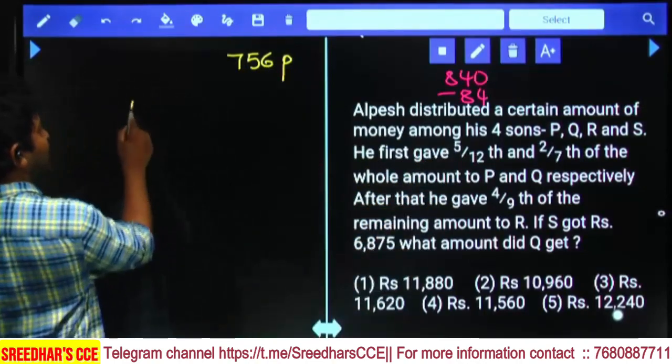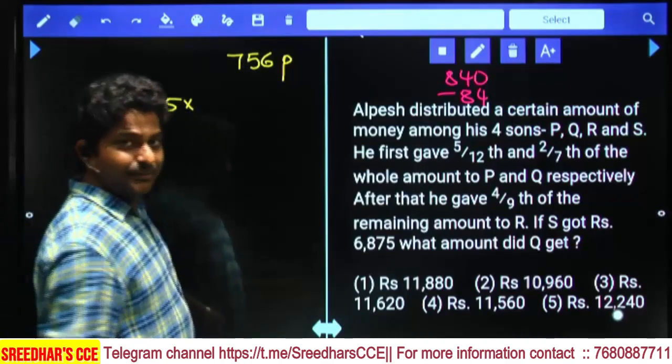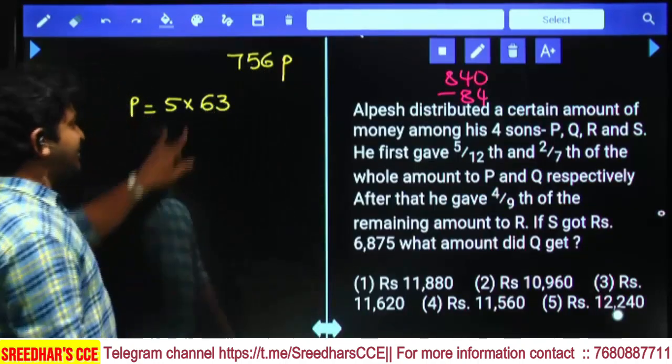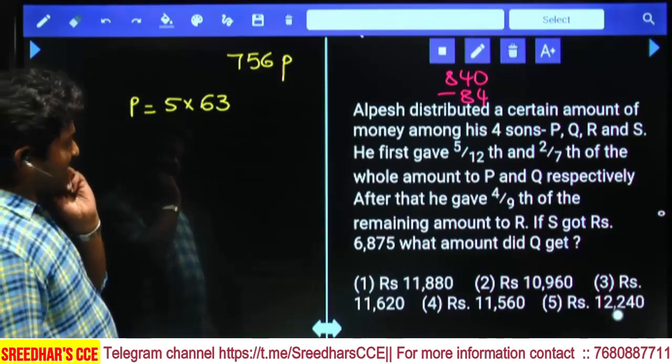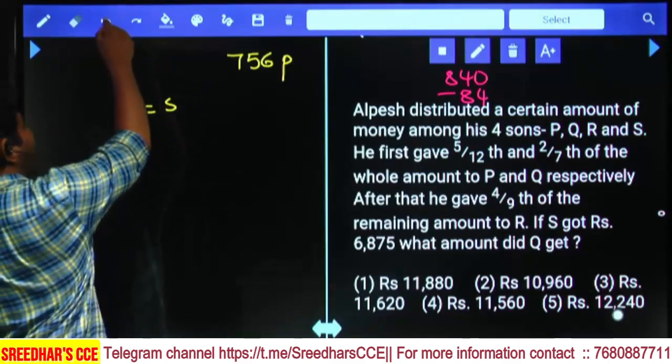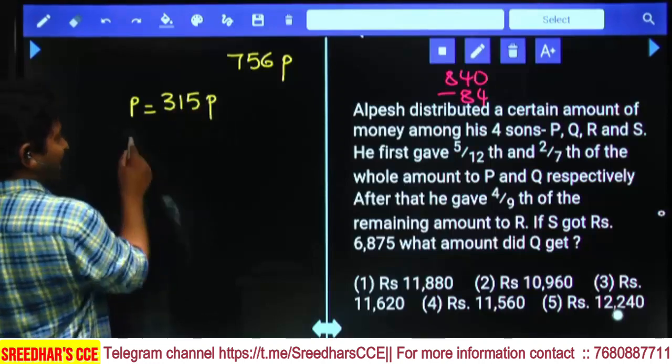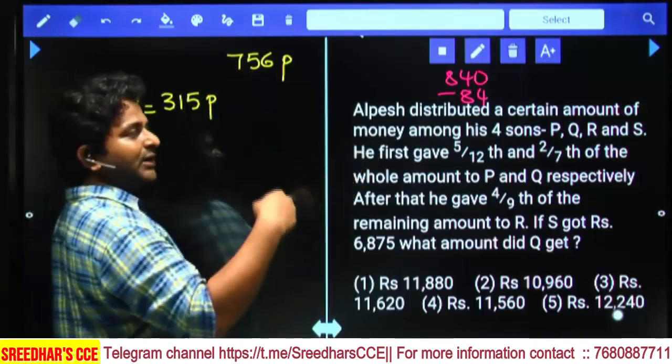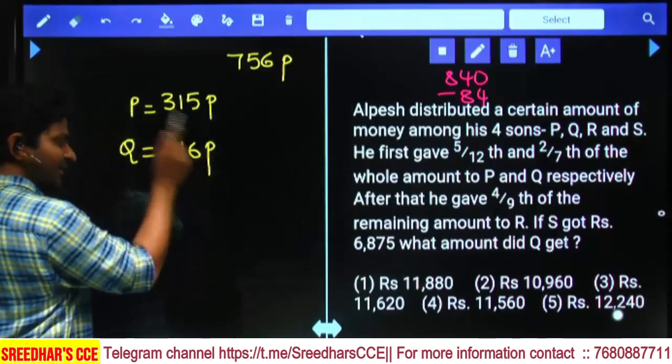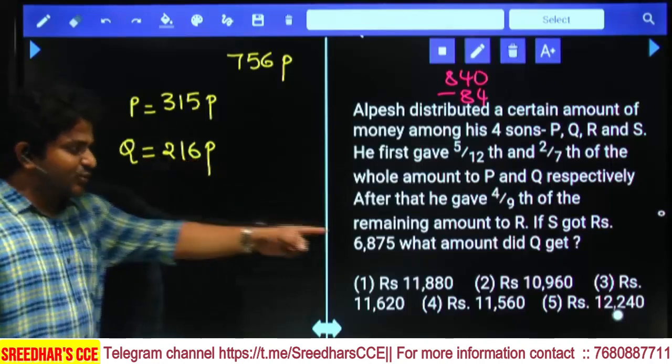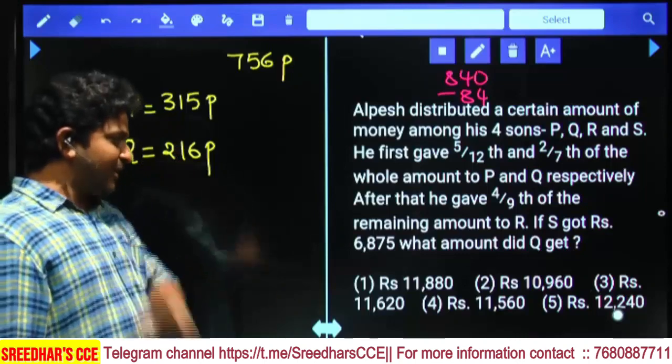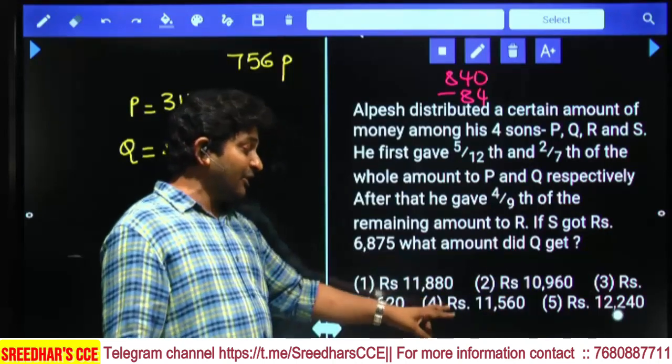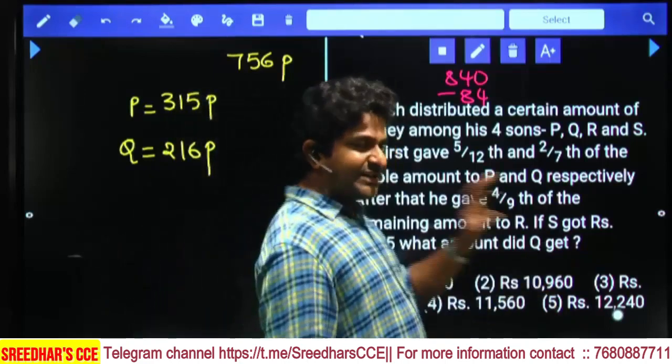Out of 756, P gets 5/12, which is 315 parts. Q is getting 2/7, which is 108 times 2 equals 216 parts. You can stop here because 216 is a 9 multiple and the answer should be a 9 multiple. First option is 9 multiple, second option is also 9 multiple. There are two options left, so we have to solve it.